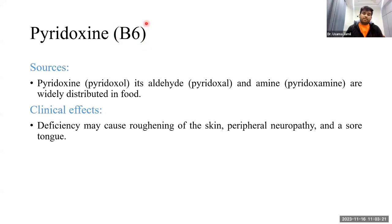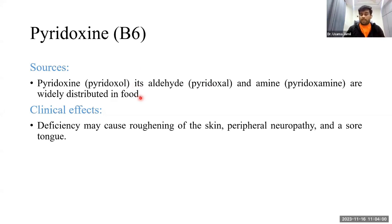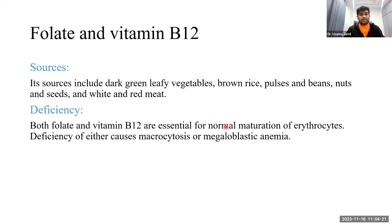Vitamin B6, also called pyridoxine, is an important vitamin involved in aging and diabetic conditions. Its deficiency manifests as rough skin, peripheral neuropathy, and sore tongue. Pyridoxine and its aldehyde and amine forms are widely distributed in food as proteins and carbohydrates. Peripheral neuropathy from B6 deficiency is commonly seen in diabetic patients and in women going through menopause.